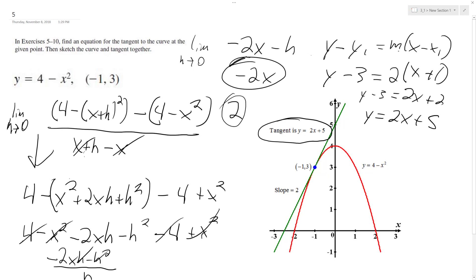Did the point slope form, plugged in 2 for m, and then used my negative 1, 3 for my point slope form, and that's how I derived 2x plus 5.